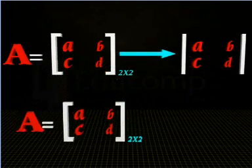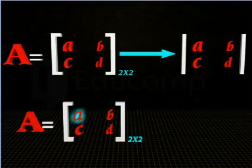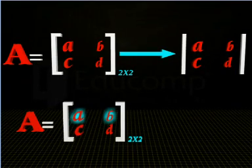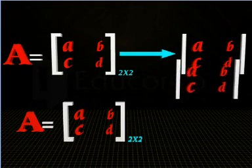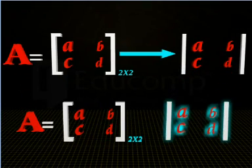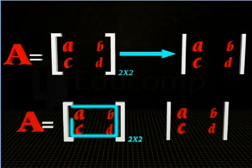If A is a matrix containing elements A, B, C, and D, then the determinant of A is defined as shown. It should be noted that only squared matrices have determinants.